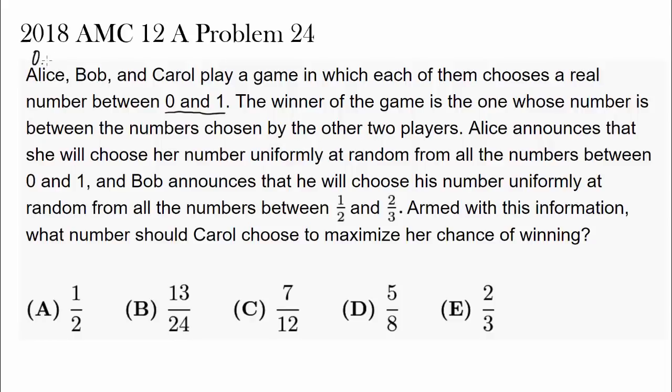So if Alice chooses 0.1 and Bob chooses 0.5 and Carol chooses 0.3, Carol wins! Fantastic!